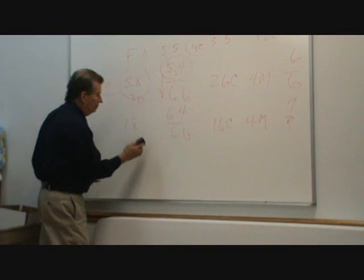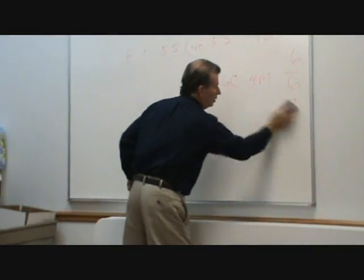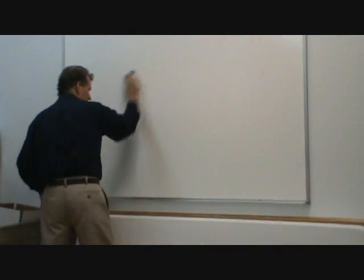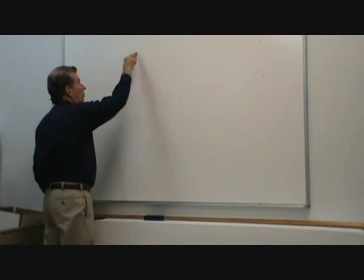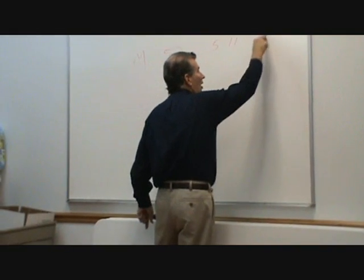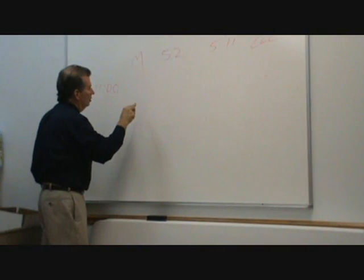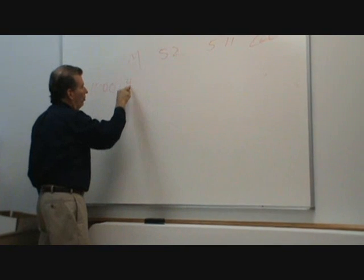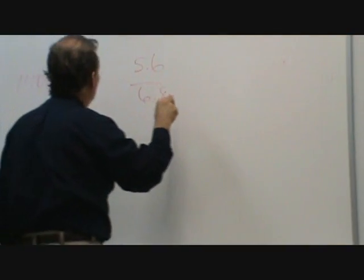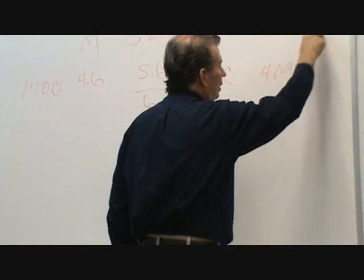I had a gentleman come in one time. Let's just do this one. This is a male, 52, 5 foot 11, 220 pounds, at 11 o'clock in the morning. Sugar, 4.6, 5.6, over 6.8, 22 C, 4 M, 7 over 8.